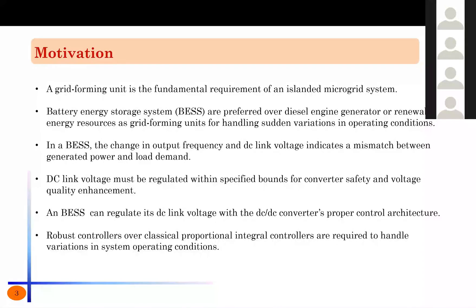Starting with the motivation: the grid-forming unit is the fundamental requirement of an islanded microgrid system because they don't have any voltage and frequency support for themselves. Therefore, a grid-forming unit is very important for an islanded microgrid system. However, battery energy storage systems are preferred for handling sudden variations in operating conditions over diesel engine generators, which have slow response time, or renewable energy resources due to their intermittent nature. In a battery energy storage system, the change in output frequency and DC link voltage indicates a mismatch between the generated power and the load demand.